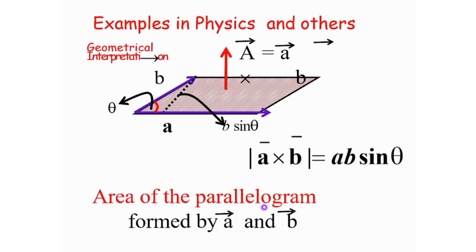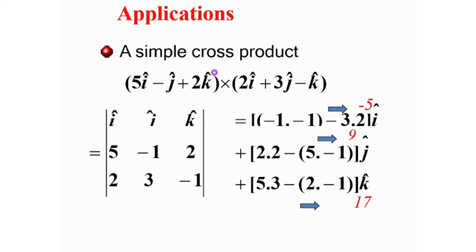The area of the parallelogram formed by vectors A and B gives an area. Click and add — a simple cross-product gives the area of the parallelogram formed by the two vectors.